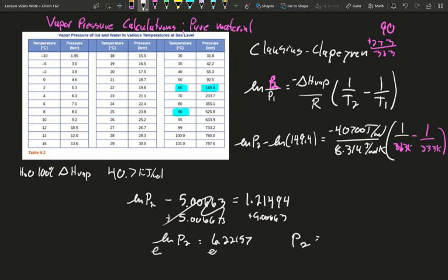Natural log of pressure 2 is going to equal 6.22157. E to both sides. Pressure 2 is going to be 503.49 Torr. Basically, 503 Torr, which if we compare, is close.